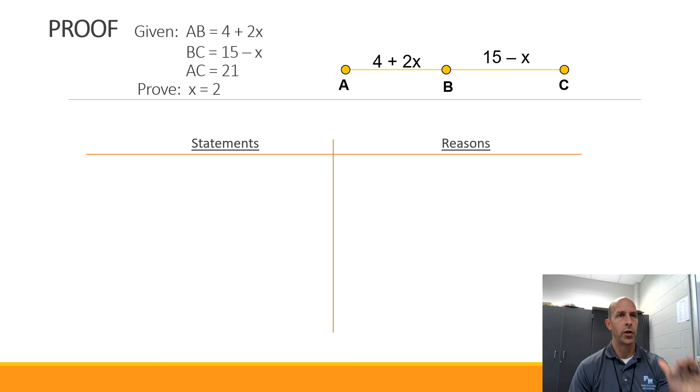So what we're going to do is create a two-column proof. On the left-hand column, we're going to do statements, and on the right-hand column, we'll do reasons. So right out of the gate, the first thing I like to do is I just put down all the given information, and that's, of course, the reason it's given.